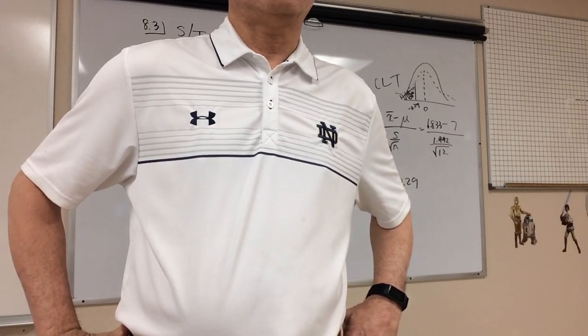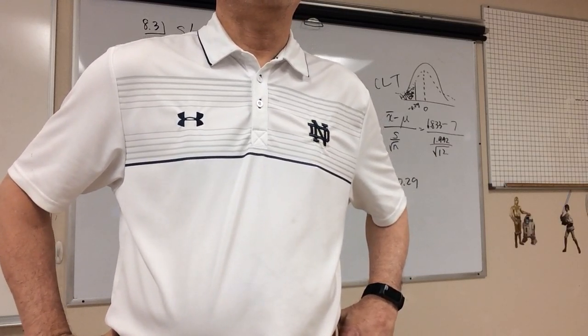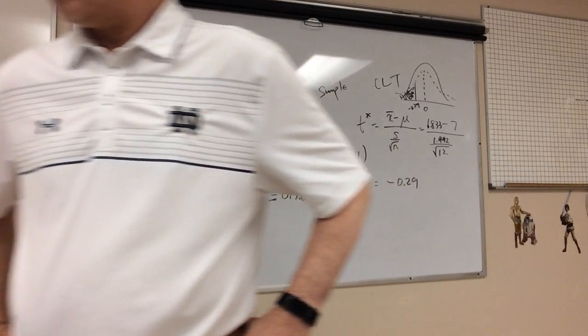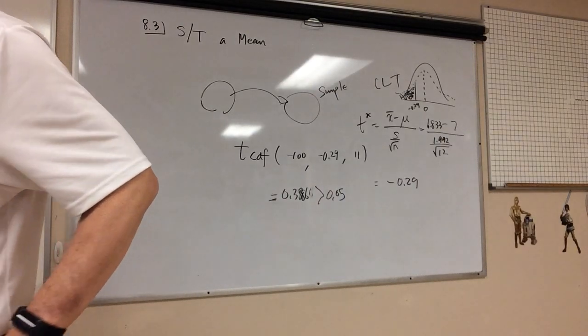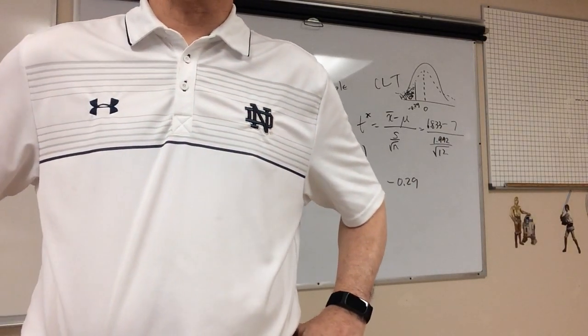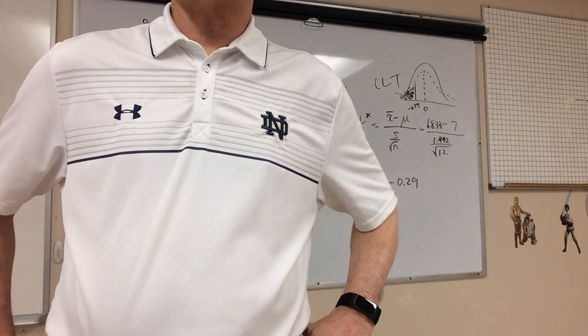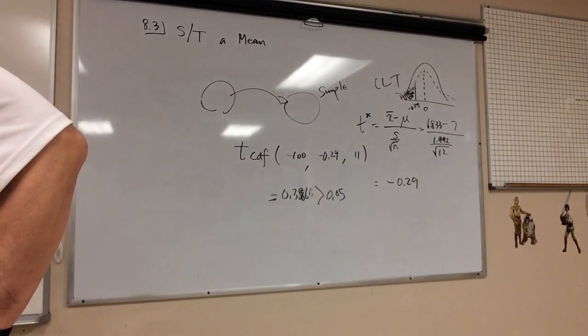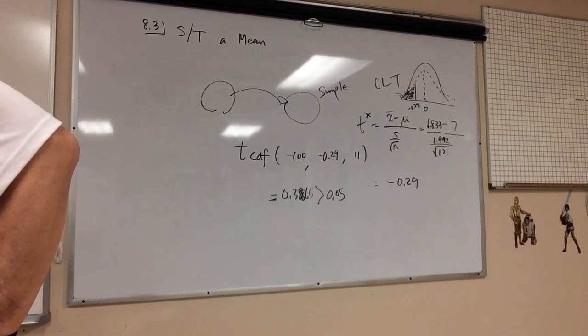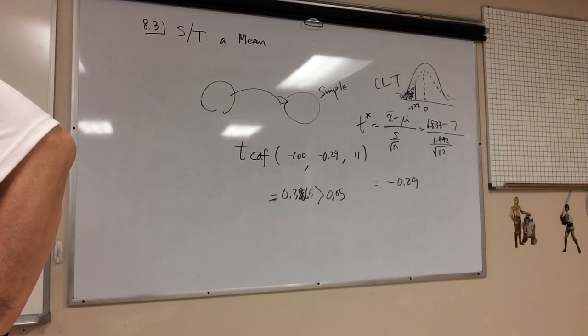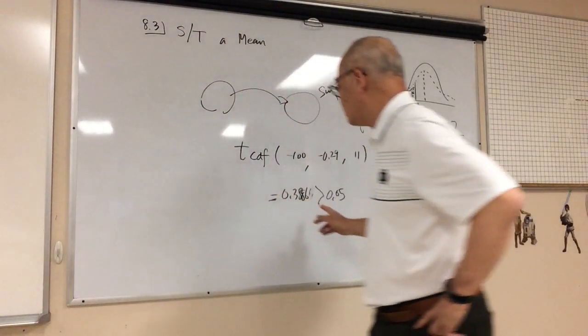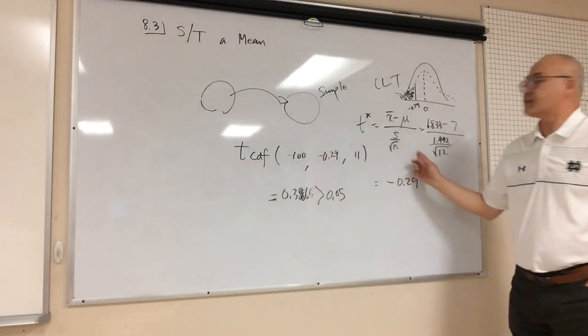It would be data, right? And then you put L1. L1, yeah, it's L1 already. We just need the mu. We need the mu, which is 7. And you're testing less than 7, right? And you go all the way down and you get a p-value of what? You should go ahead and calculate it all the way through. 0.3886.